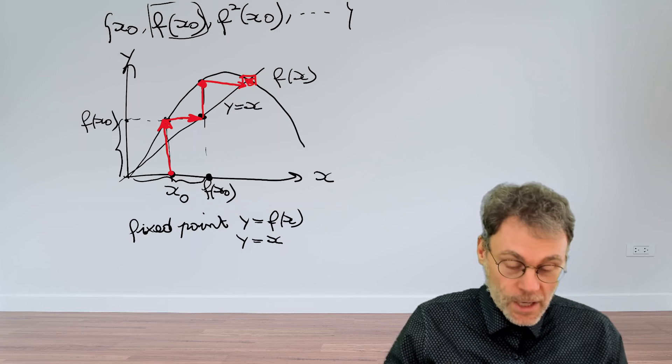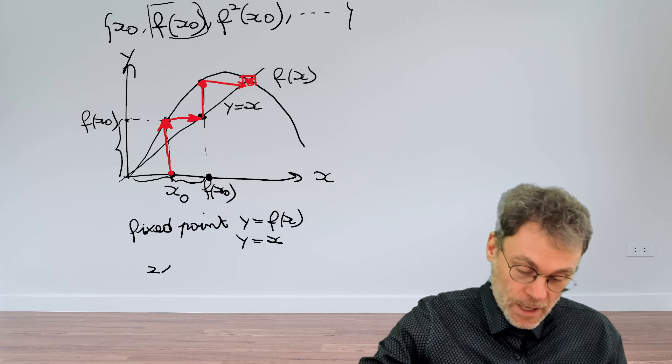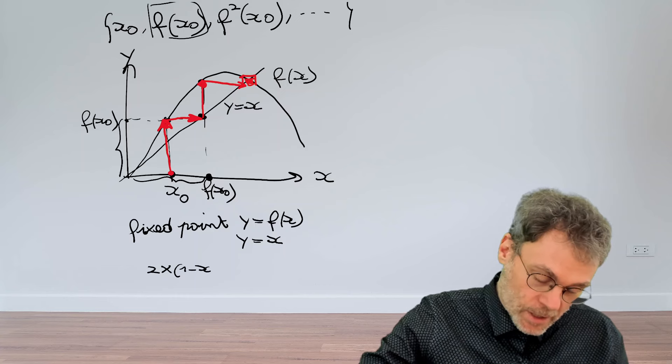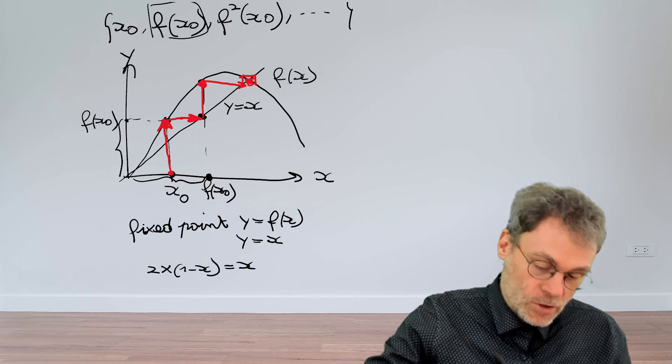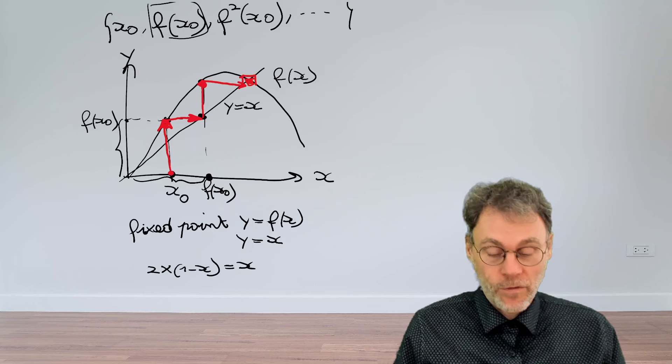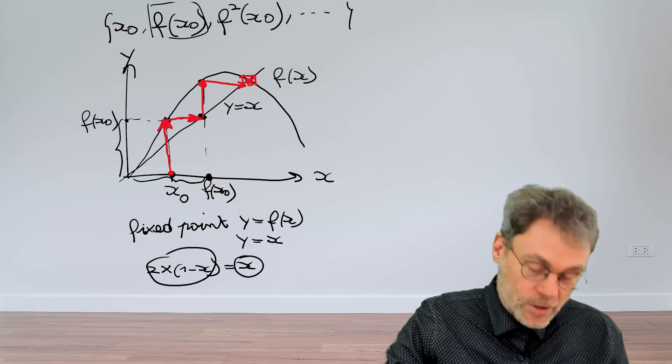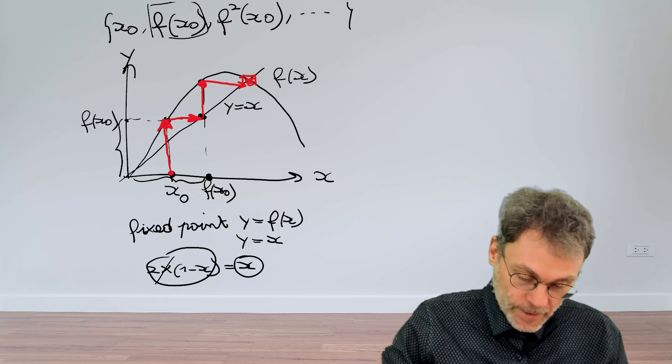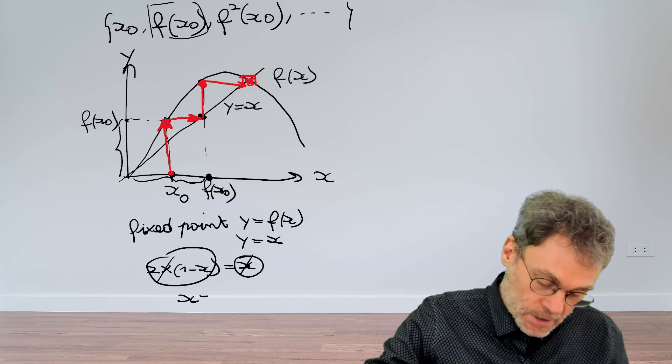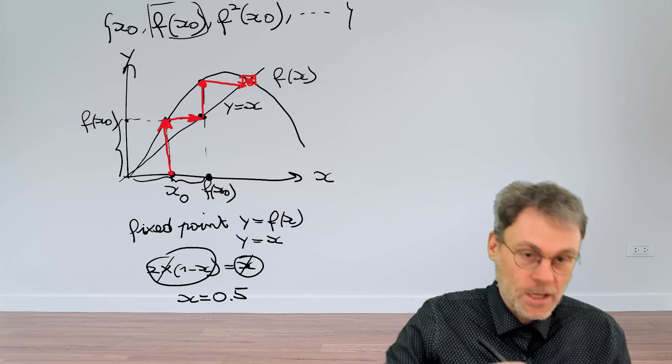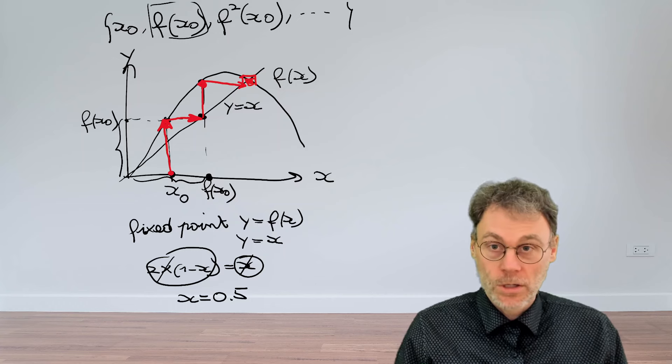Very specifically for the case of the logistic map, for example, if you have 2x times 1 minus x, that should be equal to x in order to get a fixed point. So again, if you apply the map, you get back the same value where you started from. If you solve that equation, you will see that the fixed point in this case is the value 0.5.